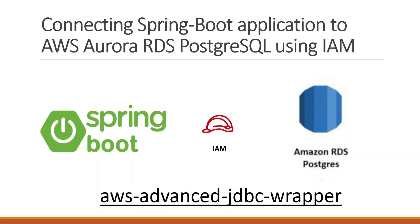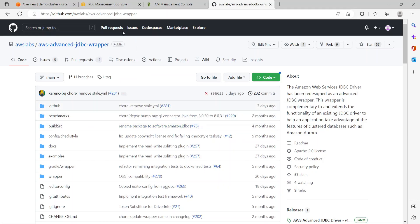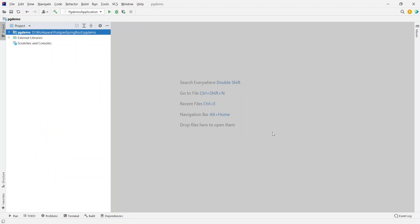Hello friends, in this video I'll be demonstrating how to connect a Spring Boot application to AWS Aurora RDS Postgres database using IAM authentication. For this we'll be using a JDBC wrapper named AWS Advanced JDBC Wrapper. This is the GitHub URL of the AWS Advanced JDBC Wrapper and it's under the AWS Labs.